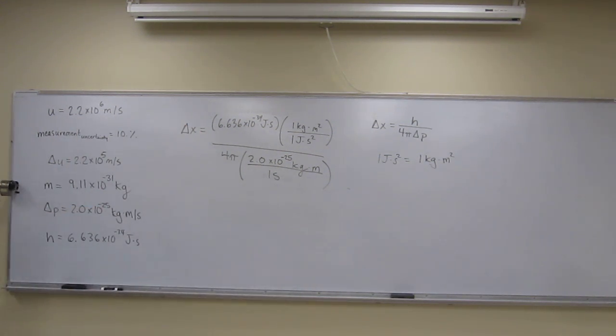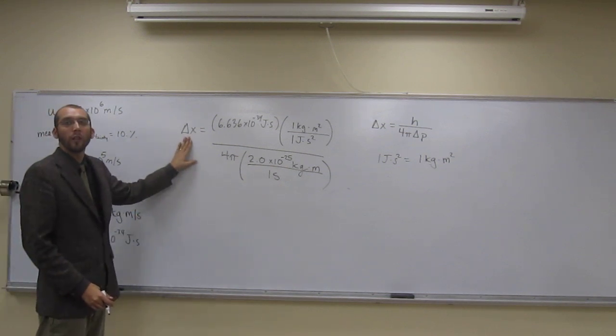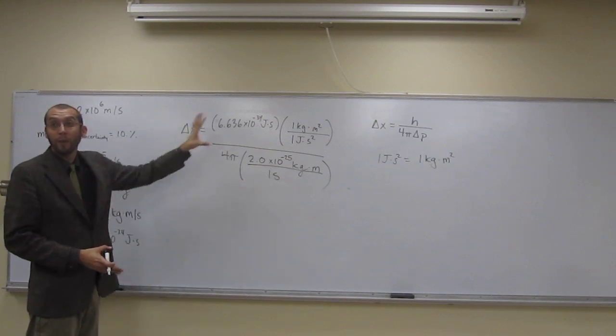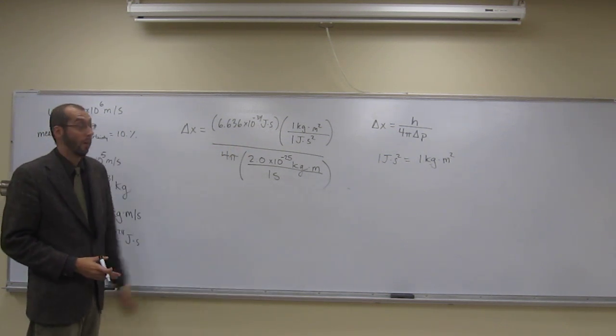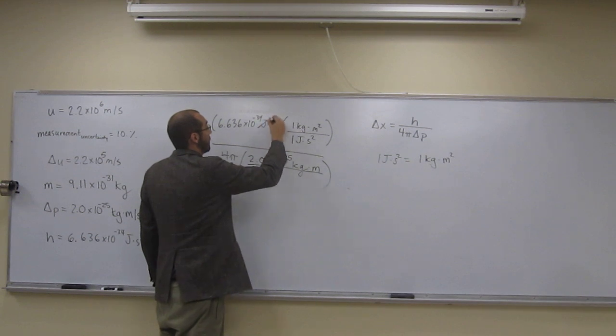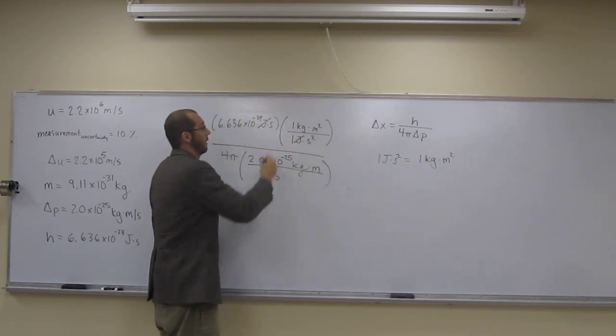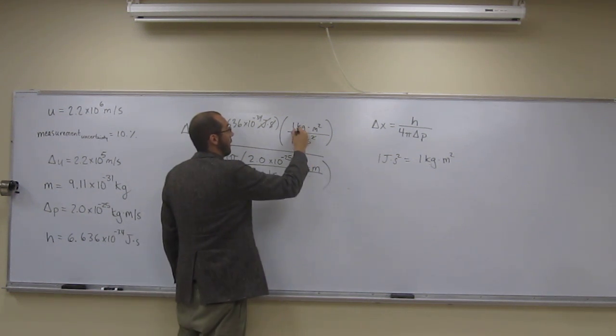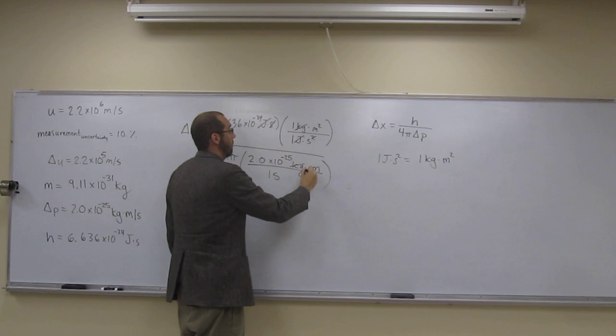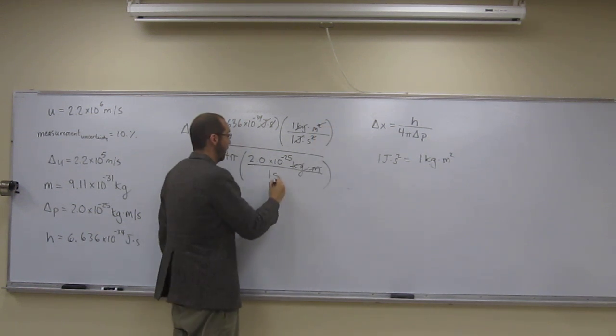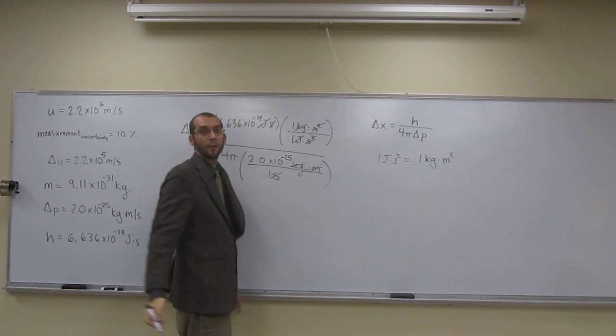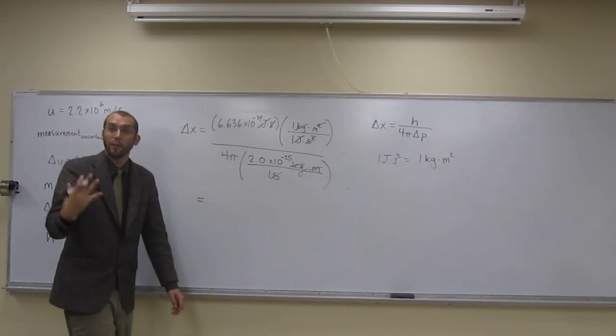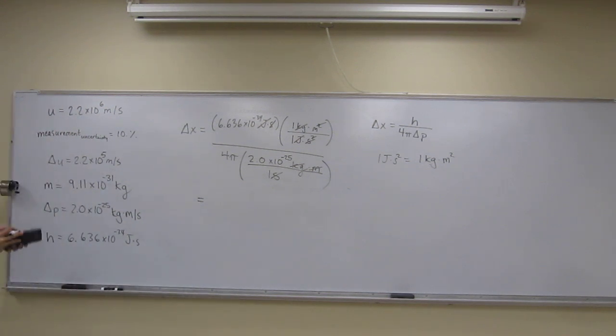So, remember, this is changing position. So, position, that's going to be like a length or something. So, hopefully we get meters when we're done. So, let's cancel our units. Joules cancels with joules. Seconds cancels with one of the two seconds. Kilograms cancels with kilograms. Meters cancels with one of the two meters. Seconds cancels with the other seconds. We're left with meters. So, that's good because that's what we wanted for the units of position.